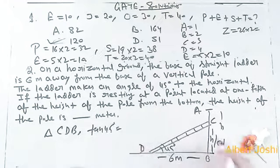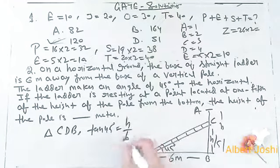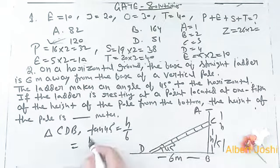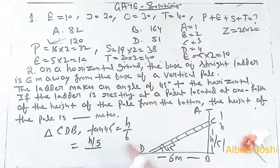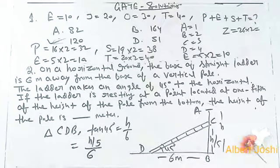Tan 45 equals height upon base. What is height? Height is h upon 5. And base, what is base? Base is equal to 6.